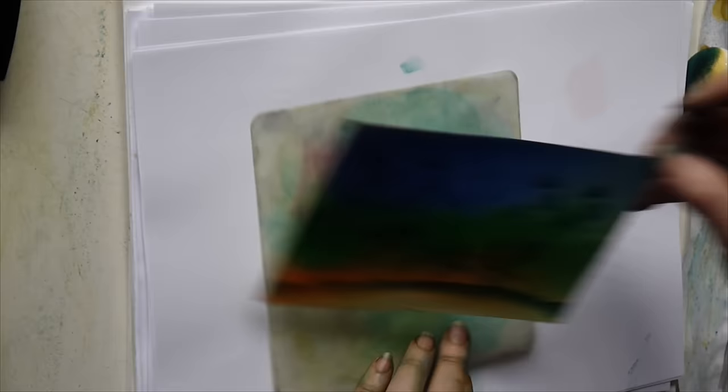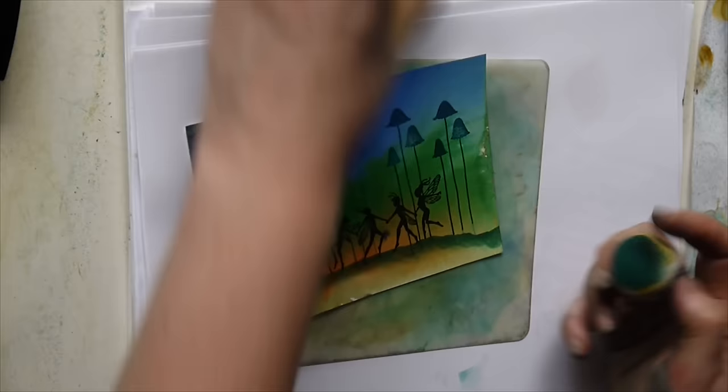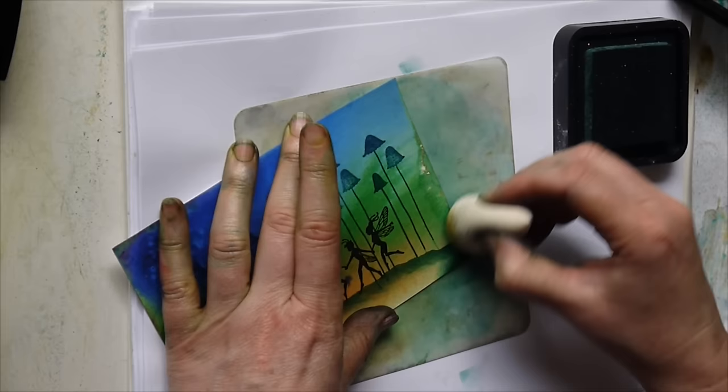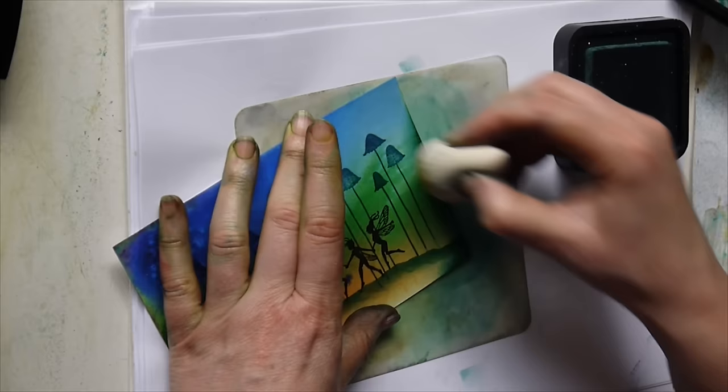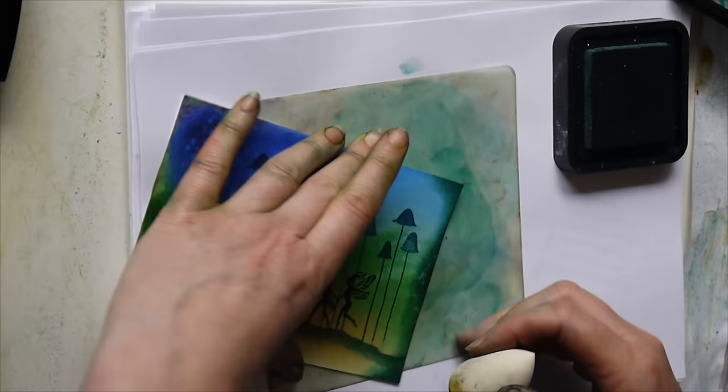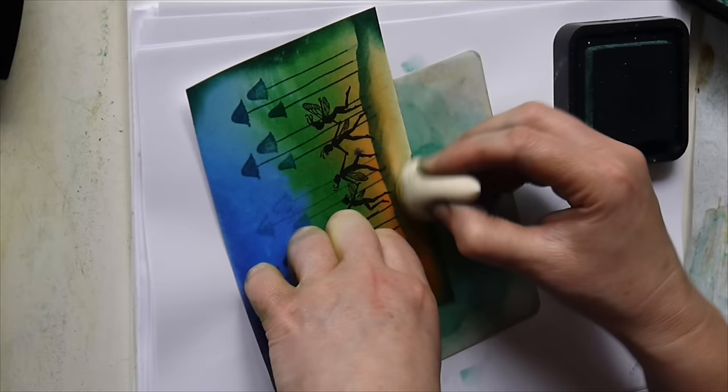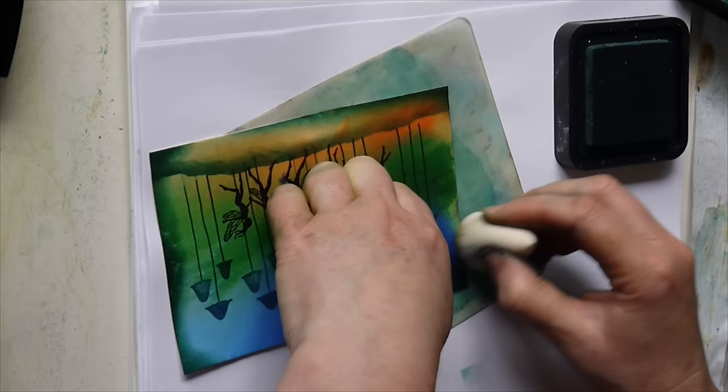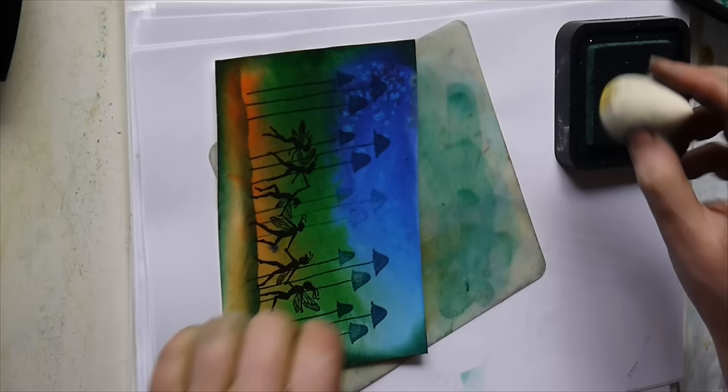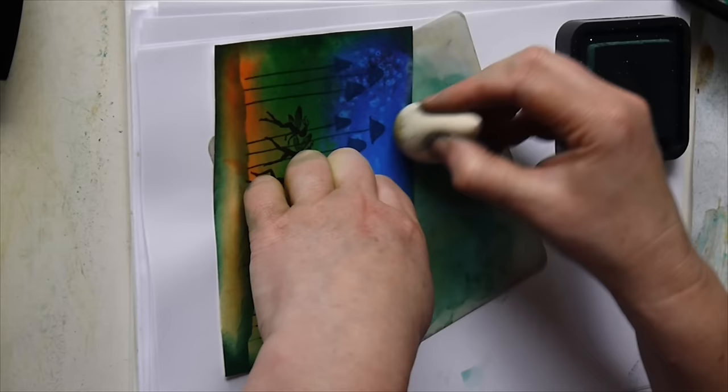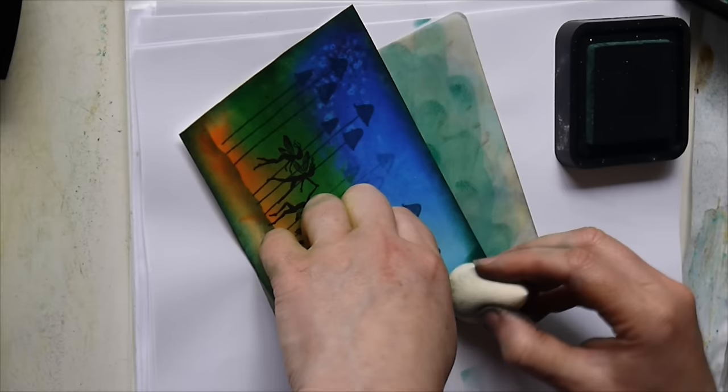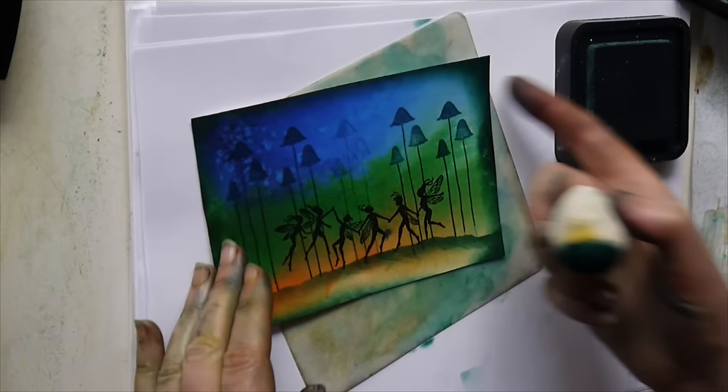Okay so we're going to use our little blending mat now. And we're going to go around the edge of the card just so we can pull the picture together. Going back to the Pine Needles, and then simply just go around the edge of the card, like so.